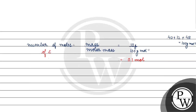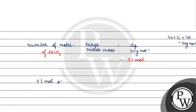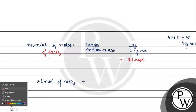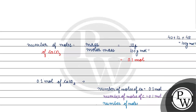We have 0.1 mole of calcium carbonate. Since there is one calcium atom per formula unit, the number of moles of calcium is 0.1 mole. Similarly, the number of moles of carbon is also 0.1 mole. For oxygen, since there are 3 oxygen atoms per formula unit, the number of moles of oxygen is 0.1 × 3 = 0.3 moles.